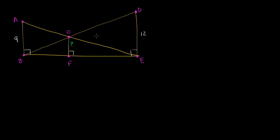Given this diagram, we need to figure out what the length of CF is. You might already guess this will have something to do with similar triangles, because triangle CFE looks similar to ABE, and triangle CFB looks similar to triangle DEB. We're going to prove both of those, and then use the ratios of the sides to figure out what CF is.